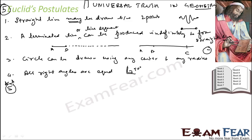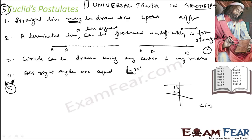The fifth postulate is very, very critical and important. This postulate says that if a straight line falls on two straight lines and makes interior angles on the same side, and if angle 1 plus angle 2 is less than 180 degrees, then those two lines, if produced indefinitely, will meet somewhere — and they will meet on the side where the angle sum was less than 180 degrees.